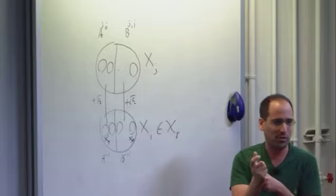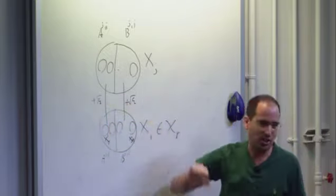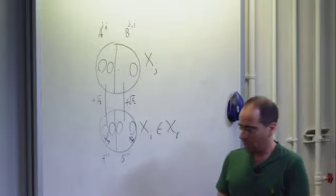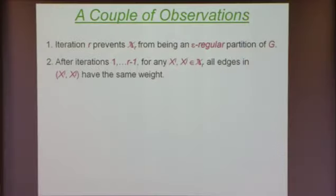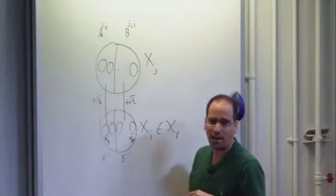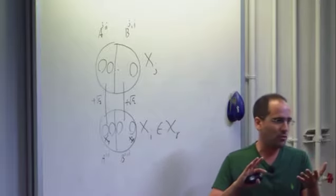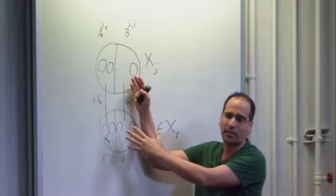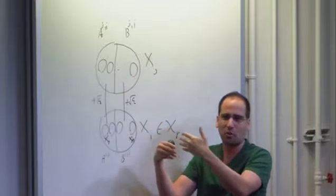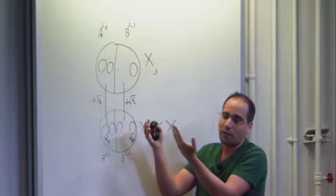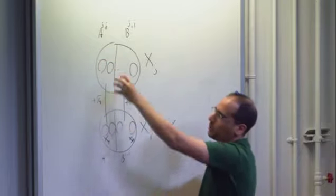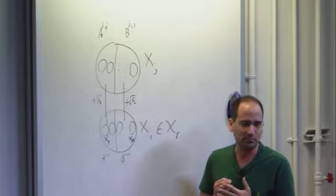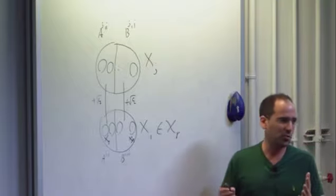This is the main difference between our proof and the proof in Gowers' paper: observe that even if I introduce a discrepancy in iteration r, the later iterations can somehow cancel this discrepancy. Because I'm not stopping after iteration r — when I perform iterations r+1 and so on, I keep adding more weight to the graph, and theoretically the density between these two parts might cancel. This will not happen, but that's what we need to prove.